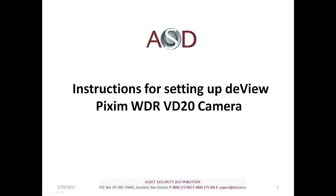If you have any questions during the webinar, just type them into the chat box and we'll go through them at the end. This webinar is on how to set up the WDR settings on the DeVue Pixel VD-20 WDR camera. These settings should work well for most lighting conditions, but obviously not all, as each site will have different lighting conditions and certain settings may need to be tweaked. All configuration steps are also in a PDF document available on ASD's help desk site, and should come with every VD-20 WDR Pixel camera we provide.